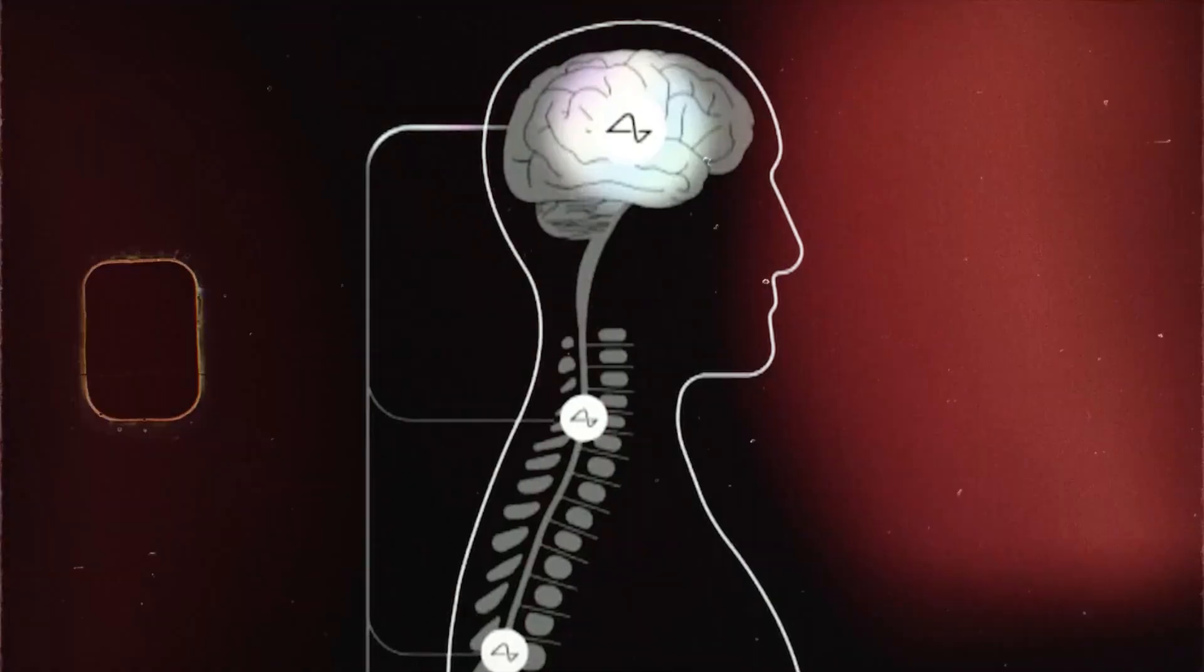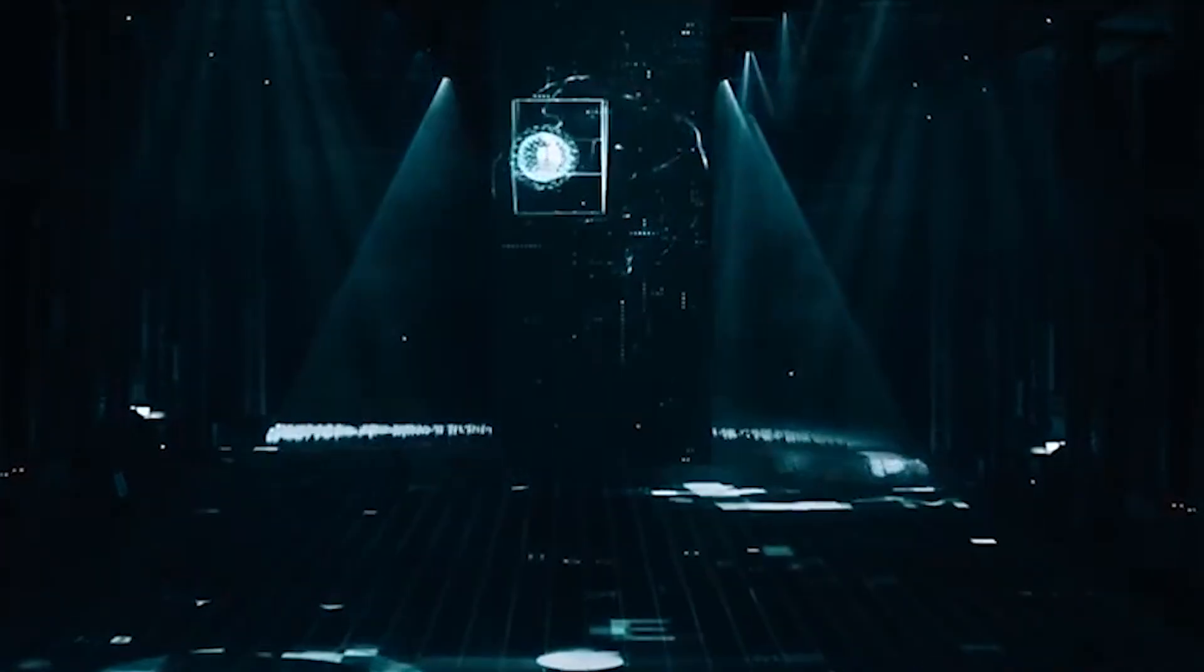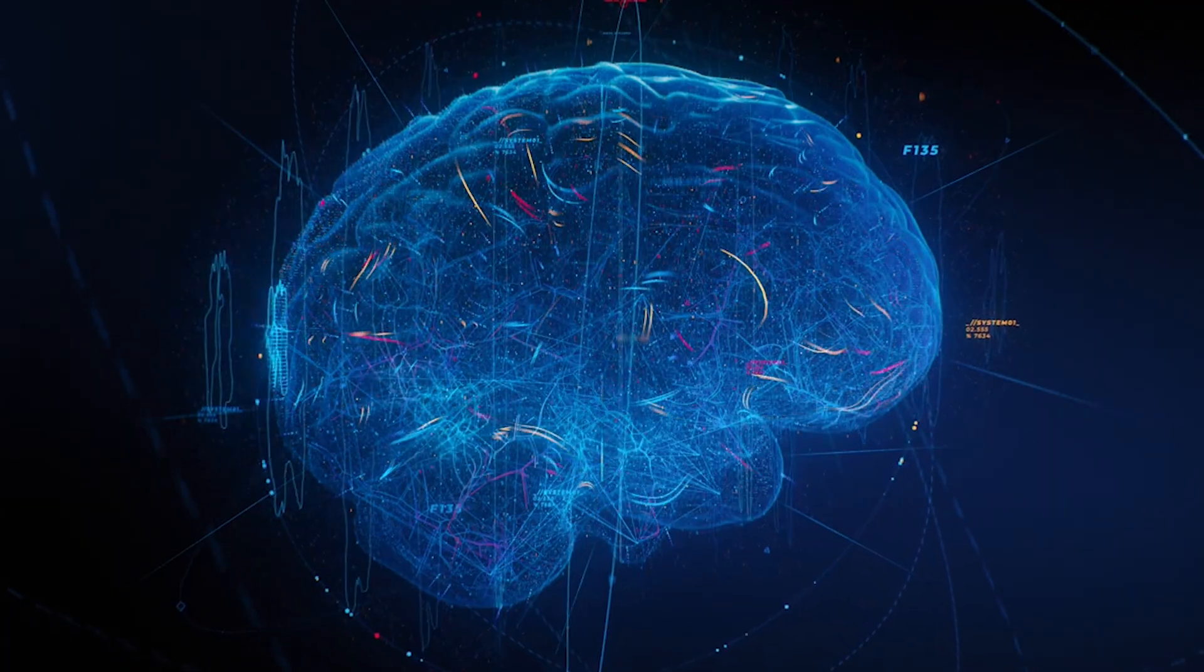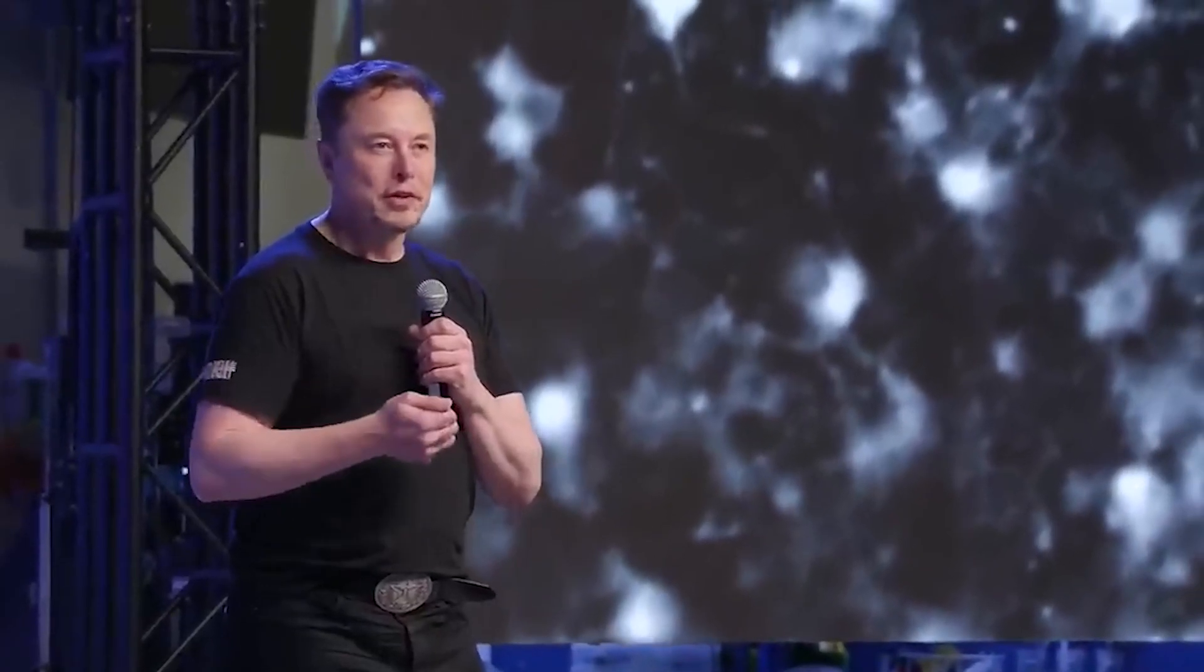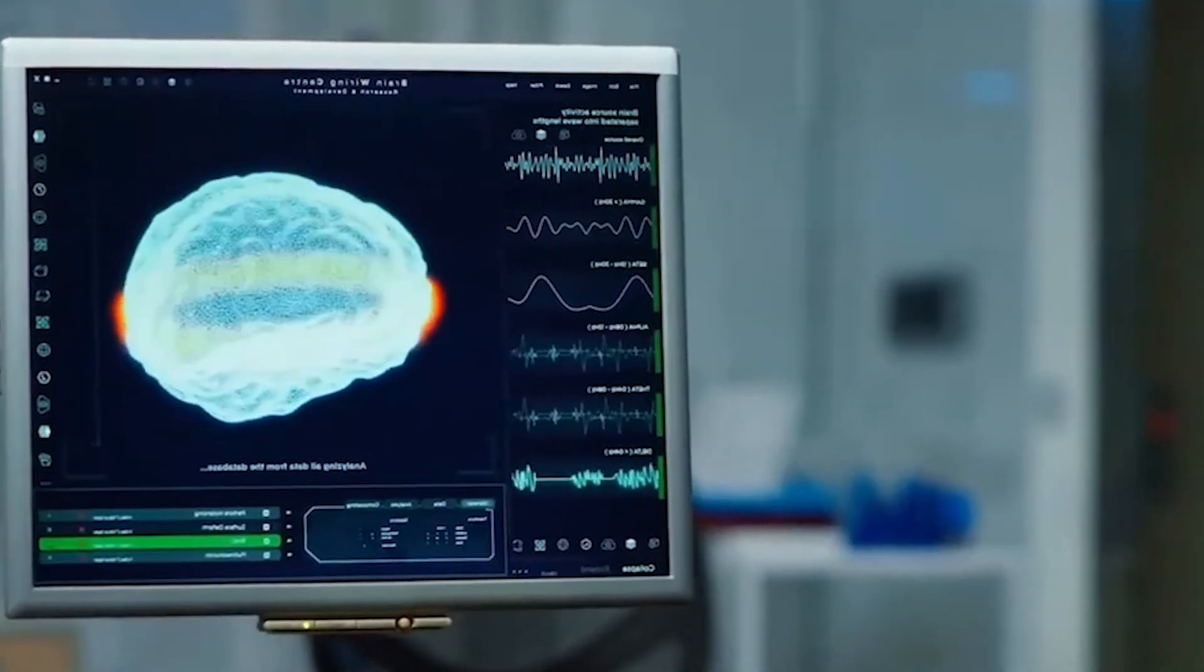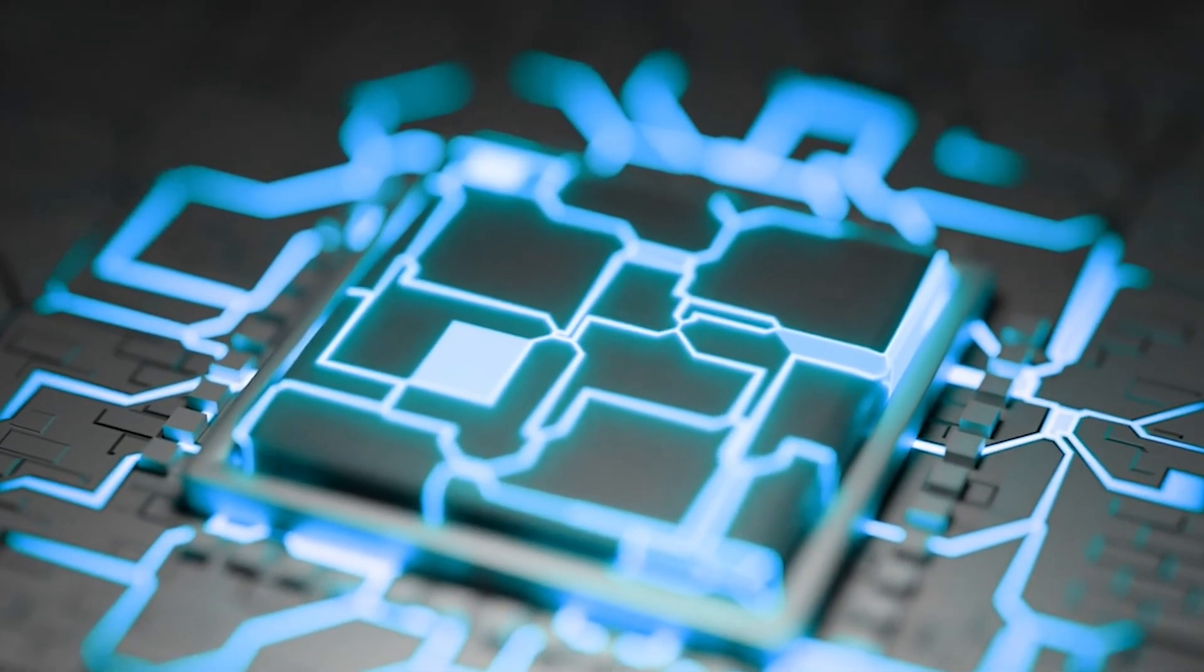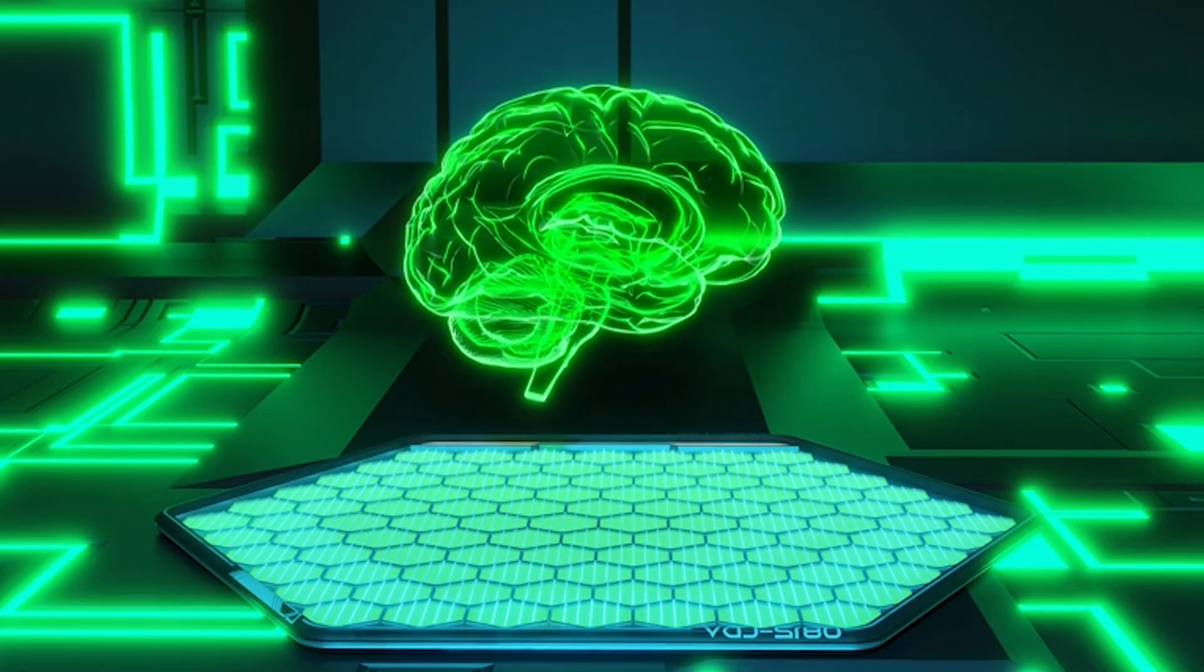While Neuralink could offer hope to millions suffering from neurological conditions, it also opens the door to a new kind of inequality, one that merges science with science fiction. Elon Musk himself acknowledges the risks, but he argues that doing nothing is the greater danger. As artificial intelligence grows rapidly more powerful, Musk believes humans must find a way to evolve, and Neuralink, he claims, is a vital step in that direction.